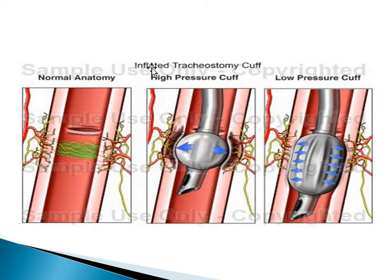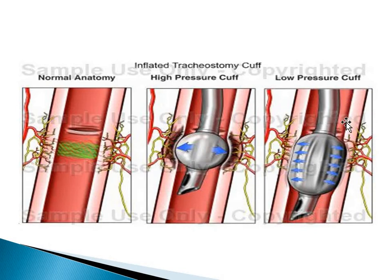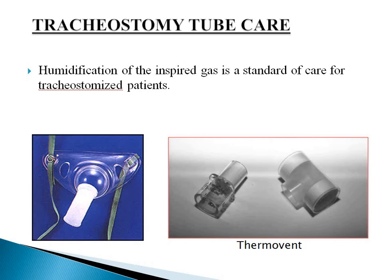Here you can see the normal anatomy with microcirculation. As the pressure increases, necrosis takes place. With low cuff pressure, longitudinal folds develop and there can be micro-aspiration and nosocomial infection.